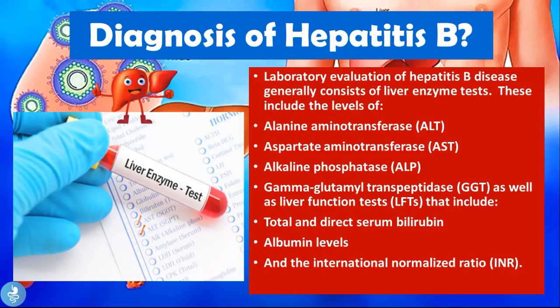These enzyme levels increase because the liver is sending a distress signal. Total bilirubin levels also increase, which is why patients present with yellowing of the skin (jaundice) and very itchy skin — bilirubin deposits collect at the level of the skin causing intense itching. Albumin levels will decrease because the liver is involved in protein production, including albumin; when liver function is impaired, it cannot produce albumin as it normally would.